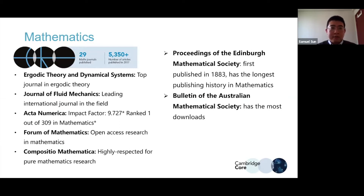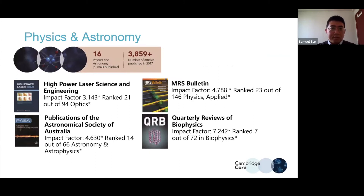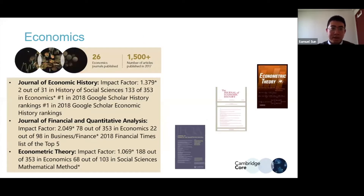Other notable titles include the Journal of Fluid Mechanics — a very widely adopted title in physics that also has a category in mathematics. In physics and astronomy, we have about 16 titles. In economics, we have strength but not as strong as in other subjects. In law, we collaborate with the American International Law Society and have very strong law titles.